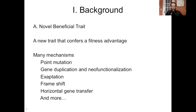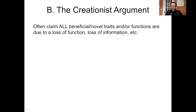Lots of new traits are associated with horizontal gene transfer — it is a common feature associated with endosymbiosis. This is not an exhaustive list of the mechanisms associated with the acquisition of novel beneficial traits, but it's a pretty decent list to get us started. The creationist argument here is that all beneficial or novel traits and/or functions are due to a loss of function, a loss of information, or some other loss within the genome. There are a number of different forms of this argument.